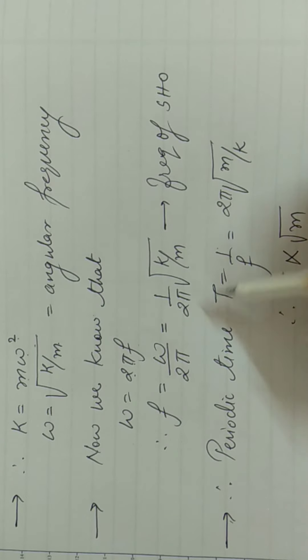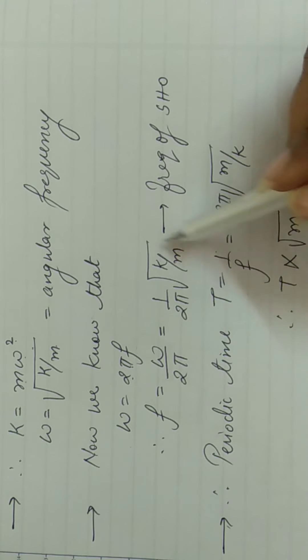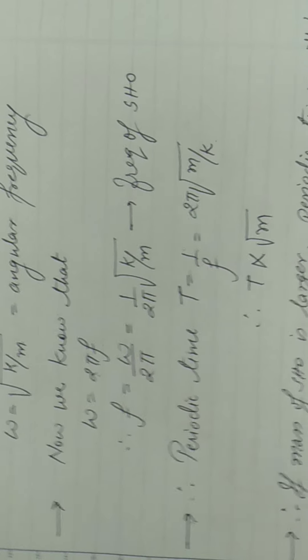Agar periodic time mil jai, toh you can obtain frequency. So now from this equation, periodic time is equals to 1 upon f. So it will be reciprocal of this equation. So ye 2π upar chala jayega aur M upar chala jayega and k will come in denominator.